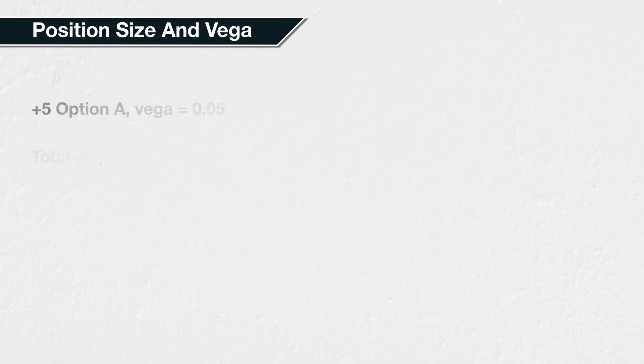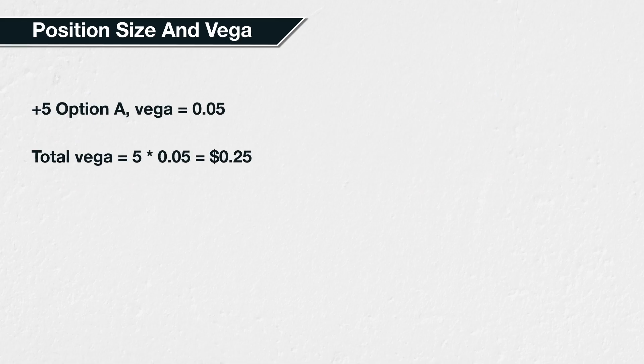For example, if you purchase 5 bitcoin call options with a vega of 0.05 each, the total vega of your position is 25 cents. This is calculated as 5 multiplied by 0.05. This means you would expect the position to gain 25 cents if implied volatility increased by 1%, and all else remains equal.